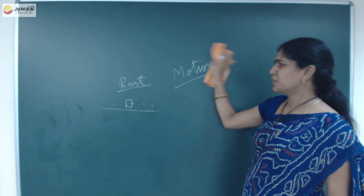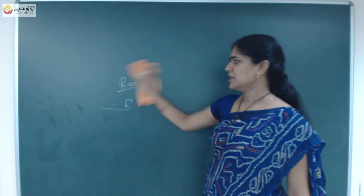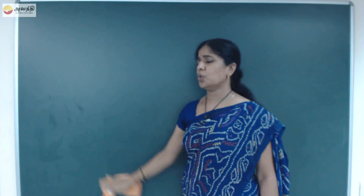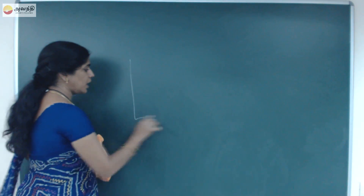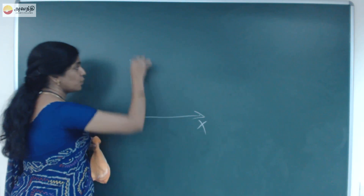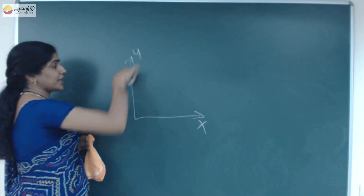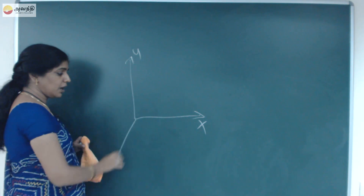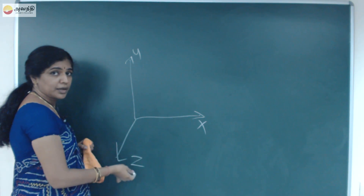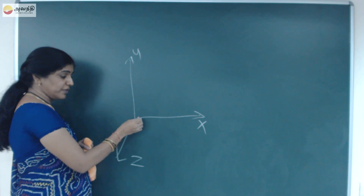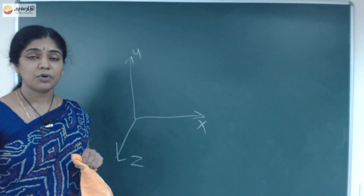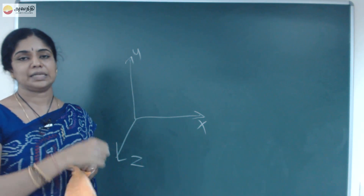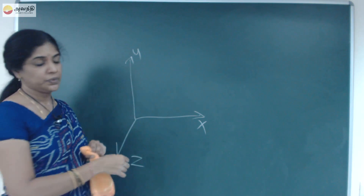If I want to describe the motion of an object, first I want to know where it is. Its position is very important. If the object moves again, it may move in the x-axis, y-axis, or z-axis. So, first if I want to describe the motion of an object, I want to know where it is — I want to find out its position.